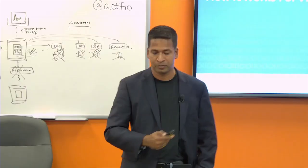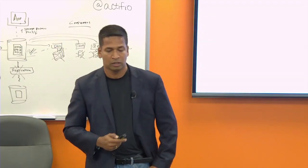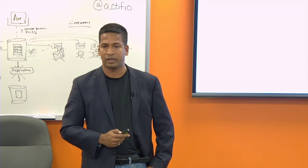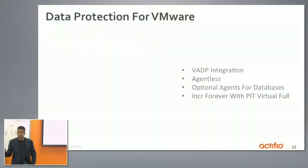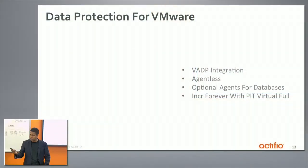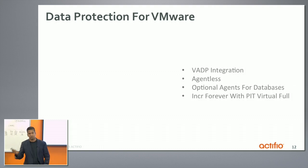Let's quickly get into how it works for VMware. The way it works is we use the standard APIs just like anyone else. We have ADP integration, we are agentless, and if the VMs have databases, we have the option of leveraging agents as well, which we call connectors.